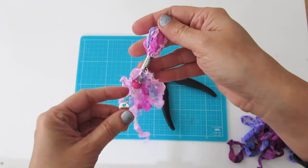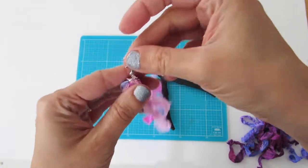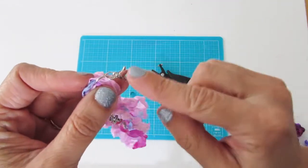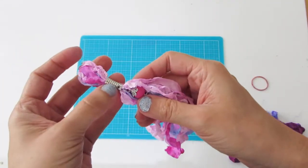To finish off the tassel, I did use jump rings, a lobster clasp, a rope ring, and charms of my choice.